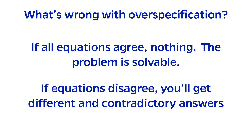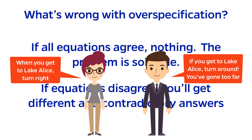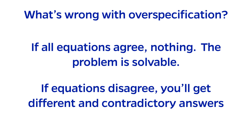There is a much more confusing possibility for over-specified systems. The equations can actually disagree and contradict one another. This is kind of like asking two people for directions again, but this time they each tell you a different thing. In this case, there is no way to know which one to trust, so the problem becomes unsolvable.